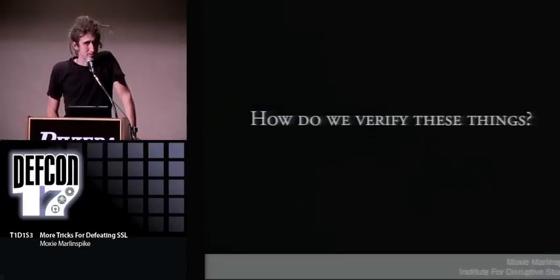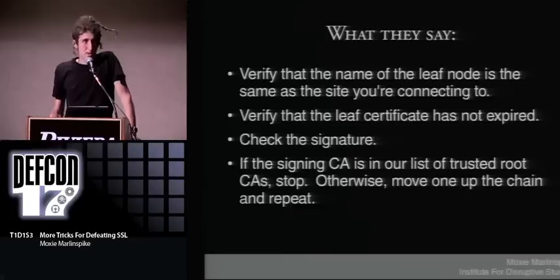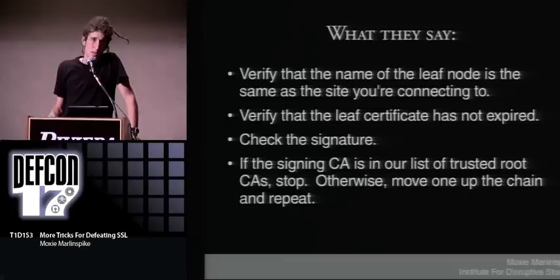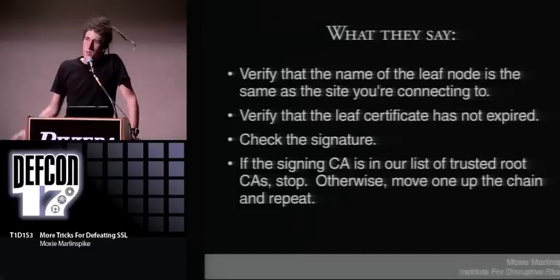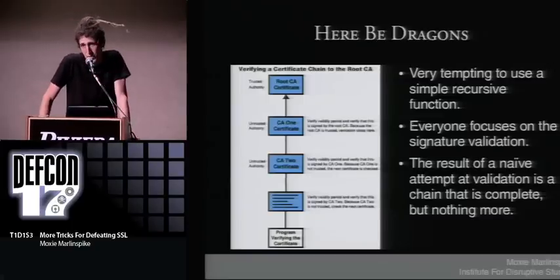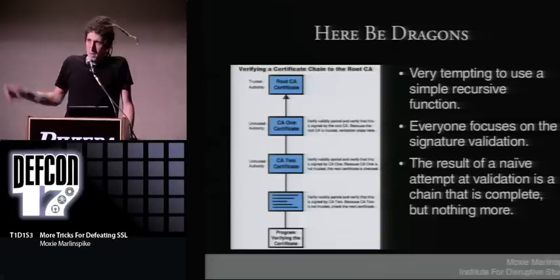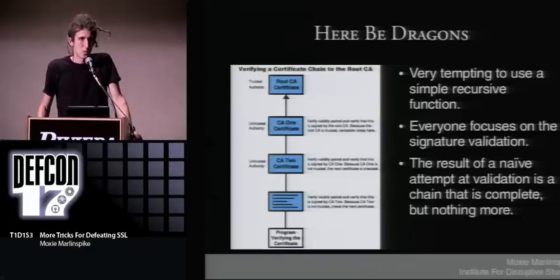The question is how do we verify these things? What everyone says is you start with the leaf node and verify that the name on the leaf node is the same as the name of the site you're trying to connect to. Then you verify that the leaf certificate hasn't expired and check its signature. If the signing CA is in your list of trusted root certificate authorities, you stop; otherwise you move one up the chain and repeat. Here's a picture from IBM's website today showing a little graph about validating these things — they lay it all out the same way.